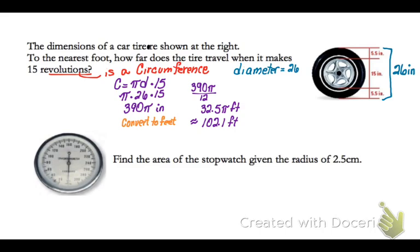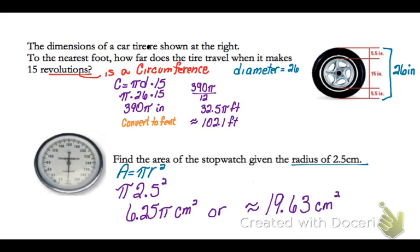Now, on the next example, it says, find the area of the stopwatch given the radius of 2 and a half centimeters. I'm going to use the formula area equals pi r squared, and replace the r with 2 and a half. When I put this in my calculator, I get 6.25 pi centimeters squared. Or I can convert it to a decimal and say 19.63 centimeters squared.